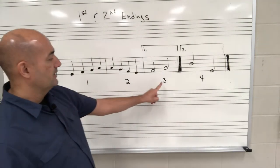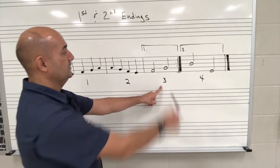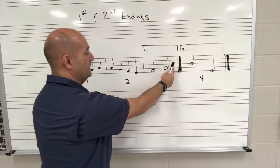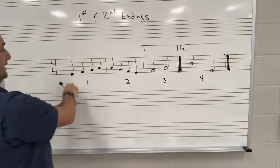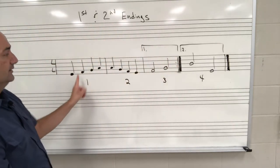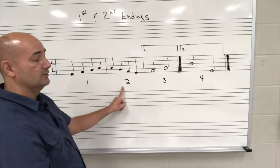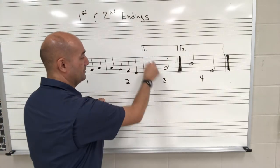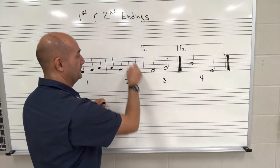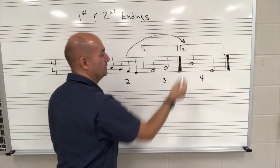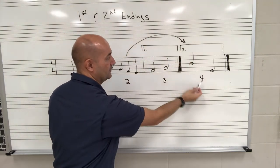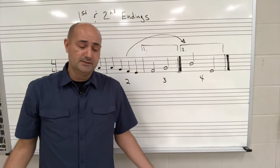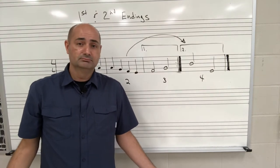Then we play measure three, which is the first ending. Then we repeat back to the beginning — we play measure one again, measure two, but this time we skip that third measure and go to measure four, which is the second ending. Well, that's it. See ya!